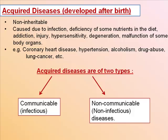Acquired diseases are diseases which are developed after birth and are non-inheritable. They are caused due to infection, deficiency of some nutrients in the diet, addiction, injury, hypersensitivity, degeneration, or malfunction of some body organs. Examples include coronary heart disease, hypertension, alcoholism, drug abuse, and lung cancer.